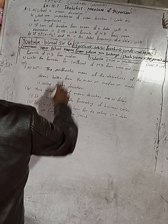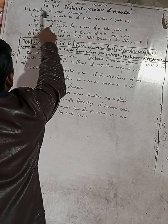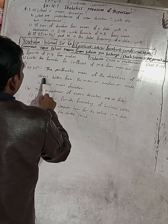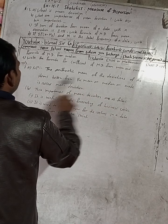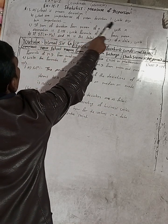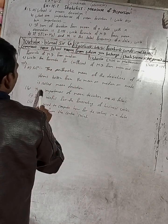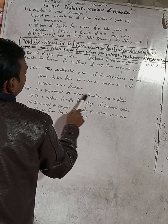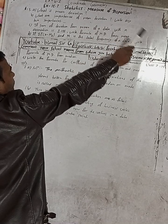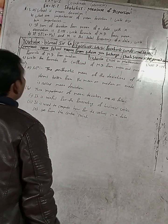So this is the answer for our question. Remember: what is mean deviation? The arithmetic mean of the deviation of the items taken from the mean, or median, or mode is called mean deviation. And for the importance of mean deviation, write any two. You can write: 'The following are the two importance of mean deviation are as follows.' Write two, not 'any two.'